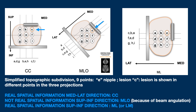To get real upper-lower direction information, I have to resort to the lateral projection. Even if, again, we have the superimposition of the medial side on the lateral one — it is a mediolateral projection — the same lesion that was seen central in the MLO is actually in the upper quadrant.